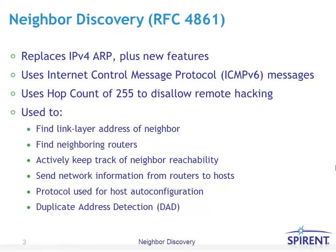Neighbor Discovery is used for a variety of features, such as to find the link layer addresses of neighbors — that is, MAC or media access control addresses, such as an Ethernet address — to find neighboring routers. There are special Neighbor Discovery messages that routers can use to announce their presence. It also actively keeps track of neighbor reachability, sends network information from routers to hosts, is used for host auto-configuration, and can be used for duplicate address detection, or DAD.